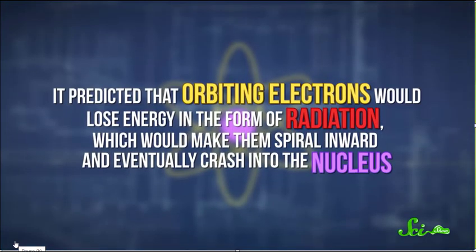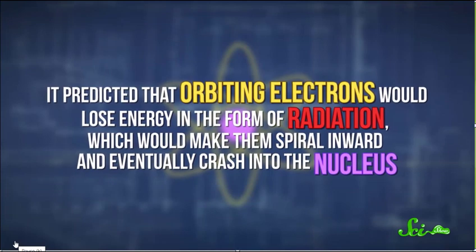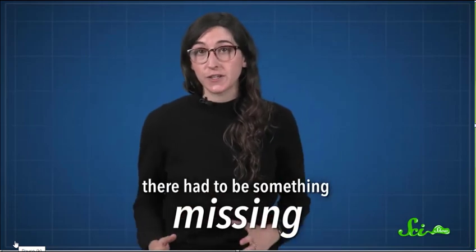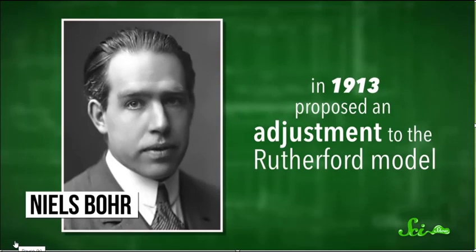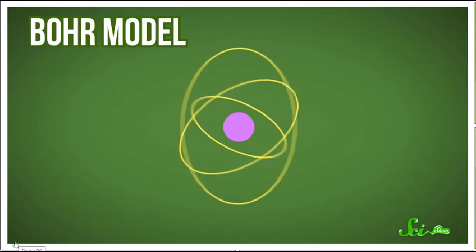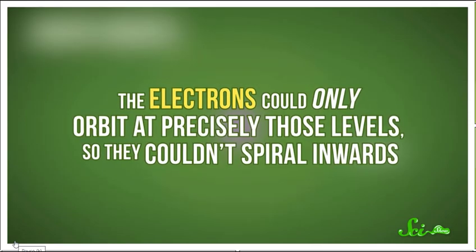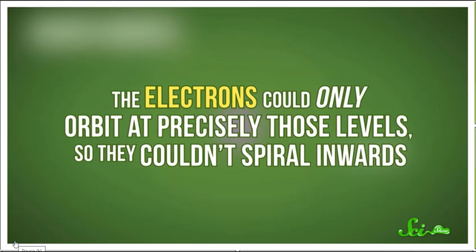There was one major problem with the planetary model. It predicted that orbiting electrons would lose energy in the form of radiation, which would make them spiral inward and eventually crash into the nucleus. This implied that all atoms would eventually collapse. But we know that stable atoms exist, so there had to be something missing. Just two years later, in 1913, Danish scientist Niels Bohr proposed an adjustment to the Rutherford model that solved this problem.